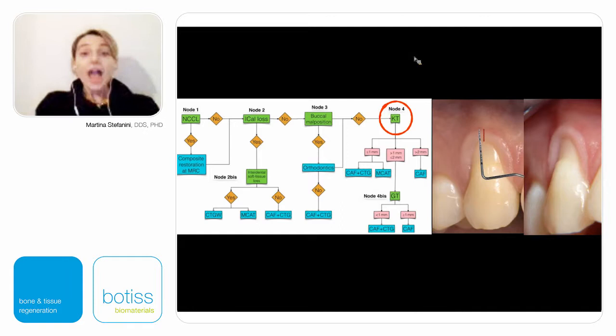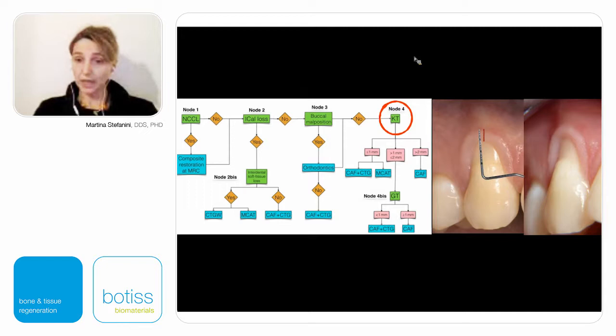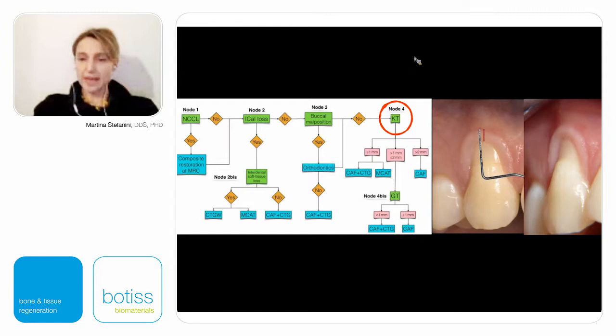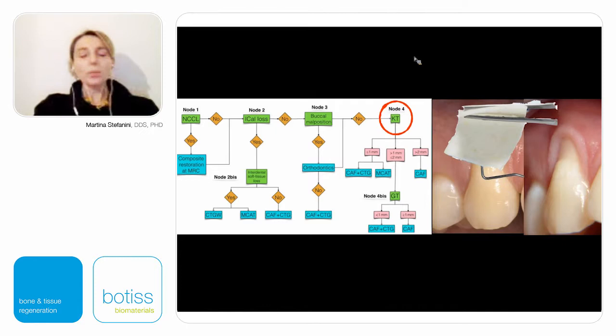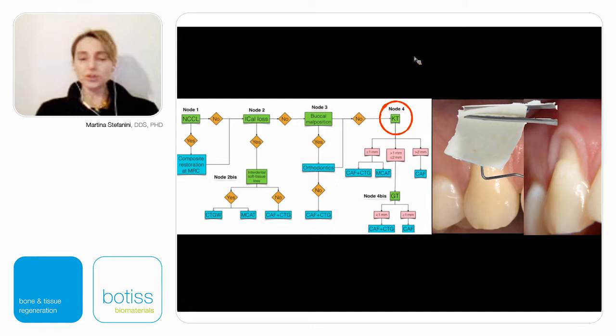If we have at least one millimeter of keratinized tissue apical to the gingival recession, we know that our coronally advanced flap can remain stable in the final position, ensuring the possibility of complete root coverage. In the presented case, where we have one to two millimeters of keratinized tissue, we can trust the coronally advanced flap to obtain complete root coverage. But if we want to increase soft tissue thickness with time, instead of harvesting a connective tissue graft from the palate, we can add a collagen matrix.